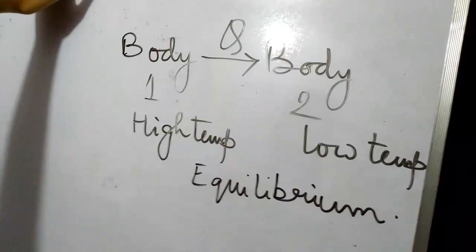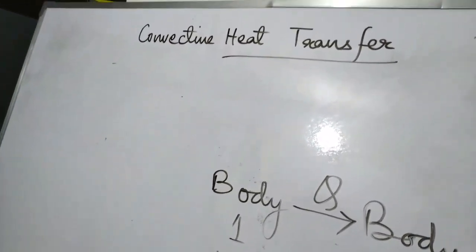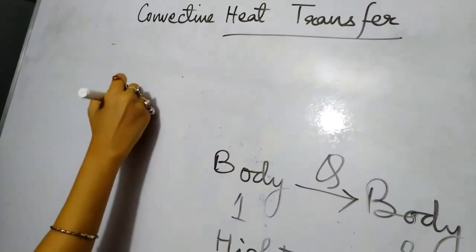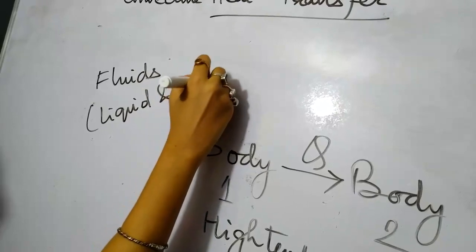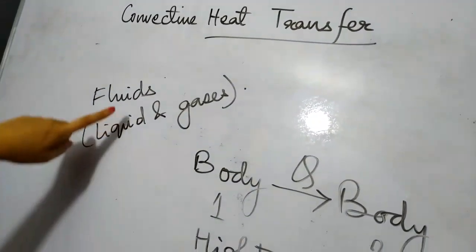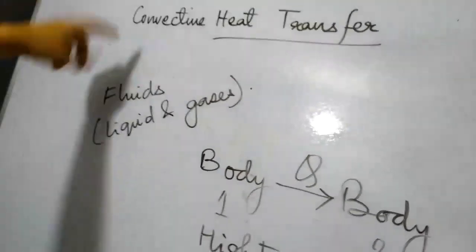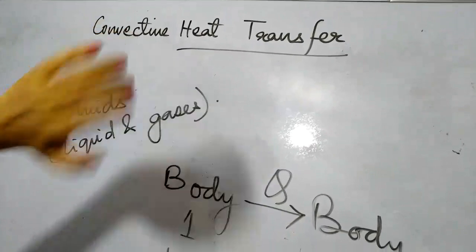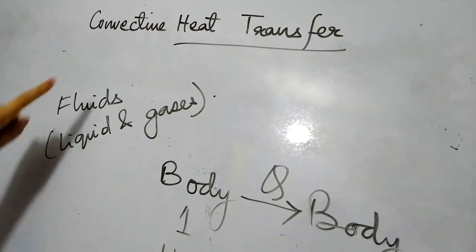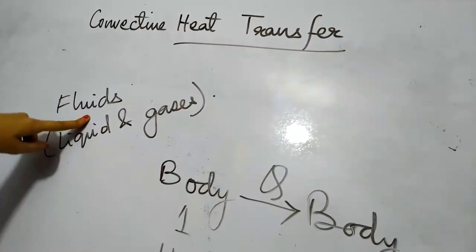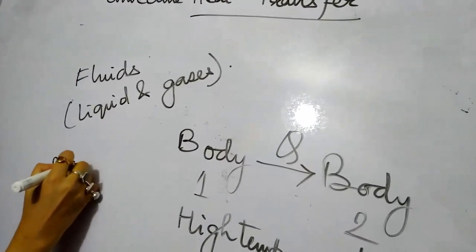Now we will be talking about convective heat transfer, which is the point of discussion for today's video. Convective heat transfer is applicable in the case of fluids. Fluids include both liquids and gases. So if heat transfer is done by fluids, then we include convective heat transfer. Generally, heat transfer can be of three types: conduction heat transfer, convective heat transfer, and radiation heat transfer. In the case of convective heat transfer, heat transfer occurs in fluids because of the movement of particles present in the fluid.